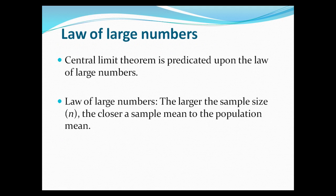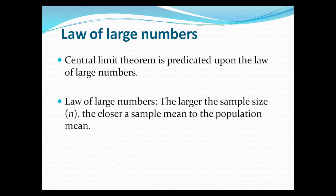Central limit theorem is predicated upon the law of large numbers. You may remember from scientific theory that there are both laws and theories in science. The law of large numbers precedes the central limit theorem — it is a law, while central limit theorem is a theory. The law of large numbers states: the larger the sample n, the closer the sample mean to the population mean. So the larger your sample size, the more likely it is to approximate the population mean.